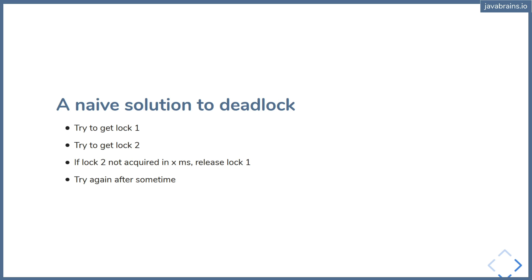What's the problem here? Imagine two threads doing the same thing. Thread one tries to acquire lock A, thread two tries to acquire lock B — they both get it. Now thread one tries to acquire lock B and thread two tries to acquire lock A — they don't get it. So they both release and wait for some time. Then they try again, the same thing repeats: thread one gets lock one, thread two gets lock two, they can't get the second lock, they wait, release, and so on. They keep doing this.